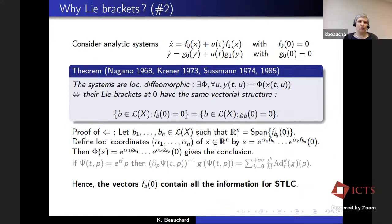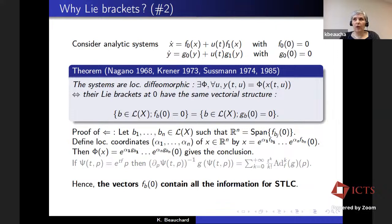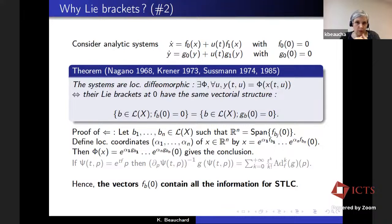This very fundamental result proves that all the information about small-time local controllability is contained inside the evaluation at zero of the Lie brackets. If two systems have the same vectorial structure of these sets, then they are diffeomorphic and so they have the same small-time local controllability properties.